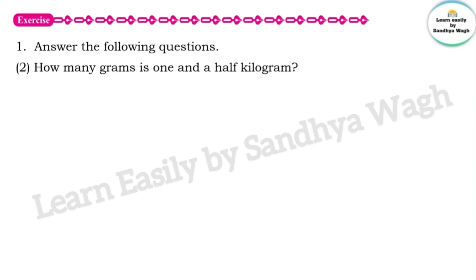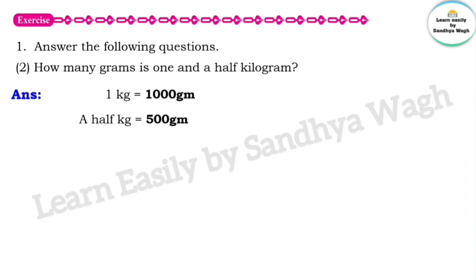1 and a half kilogram — how many grams? 1 kg equals 1000 grams and half a kilogram equals 500 grams. So for 1 and a half kilogram, we need to add 1000 grams and 500 grams, giving us 1500 grams.